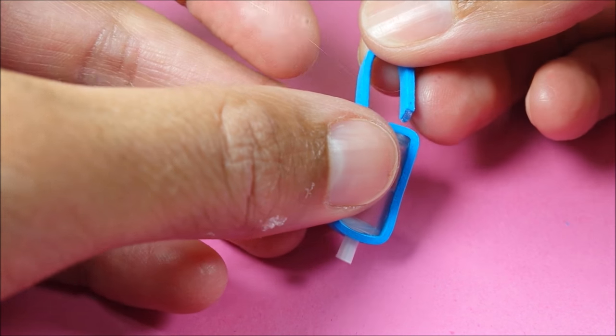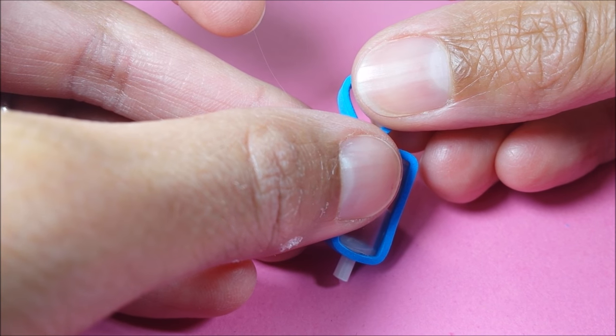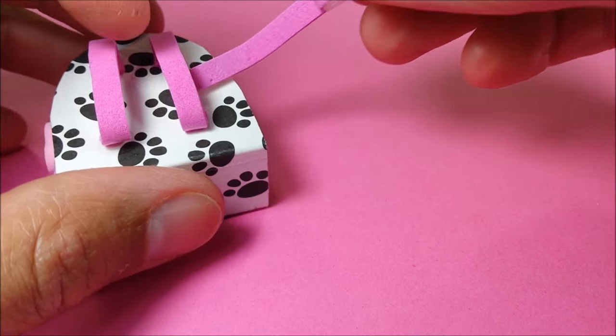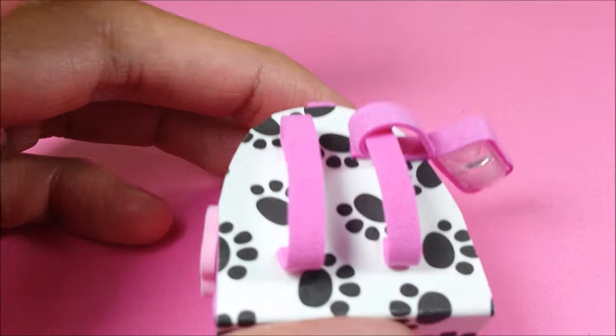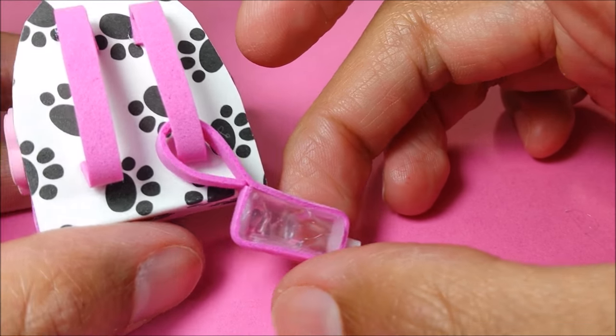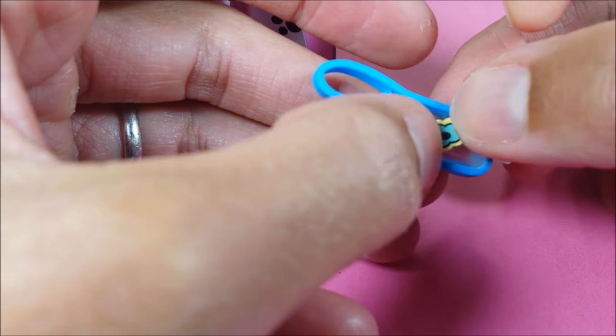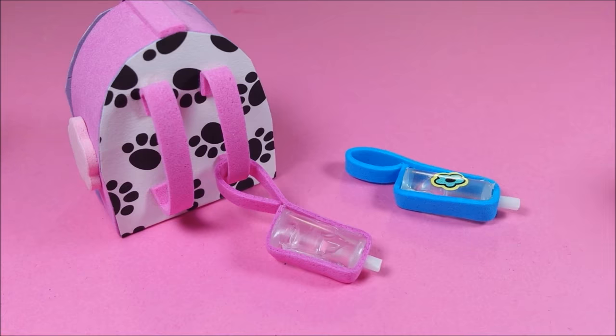And now you can glue your little wristband. And if you want it attached to your backpack, first slide it on the strap and then glue. And if you like, you can add a sticker, and guys you are so totally good to go.